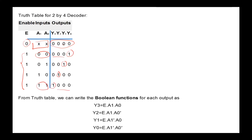From the truth table, it is very easy to derive Boolean functions for the outputs. Y3 is one only when A1, A0, and E are all equal to one. Y2 is one if A1 and not A0, with enable one. Y1 is equal to one when enable is one and inputs are 01 — that is, not A1 and A0. Y0 is equal to one only when E is one and not A1 and not A0.